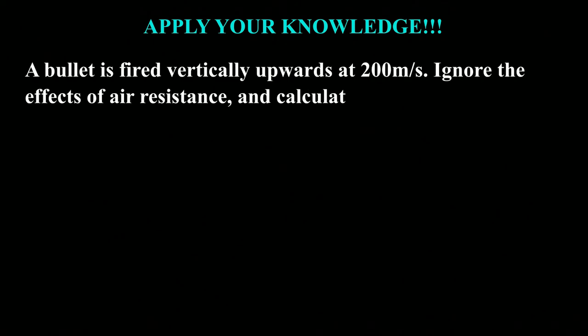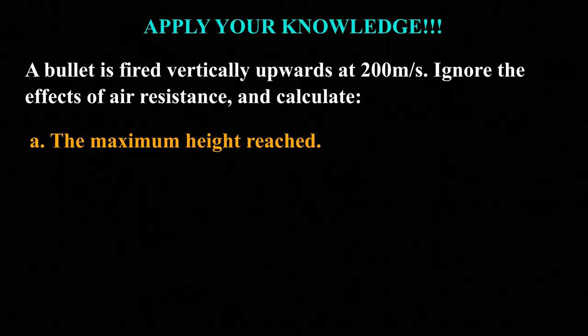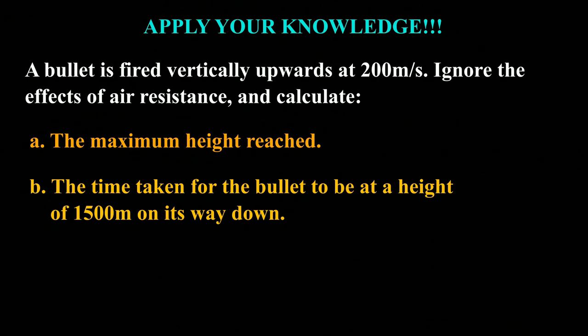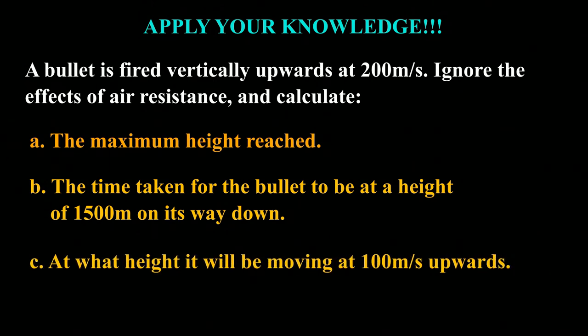Now let's apply our knowledge with some calculation questions. A bullet is fired vertically upwards at 200 meters per second. Ignore the effect of air resistance. Calculate: (1) the maximum height reached; (2) the time taken for the bullet to be at a height of 1500 meters on the way down; (3) at what height it will be moving at 100 meters per second upwards.